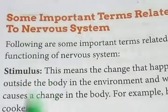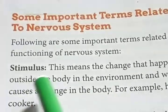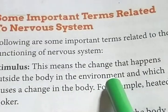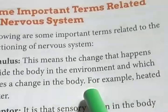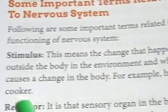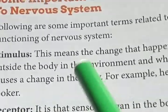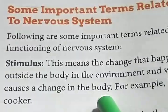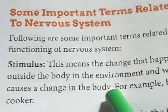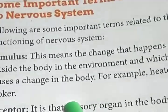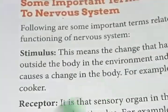The first term is stimulus. This means the change that happens outside the body in the environment and which causes a change inside the body. For example, a heated cooker — any kind of change that occurs outside the body in the environment and causes a change inside the body is called a stimulus.